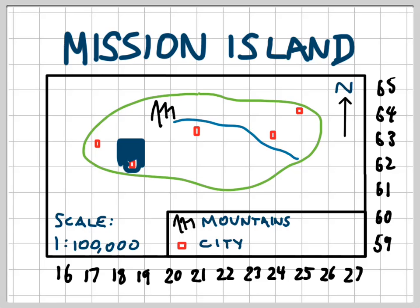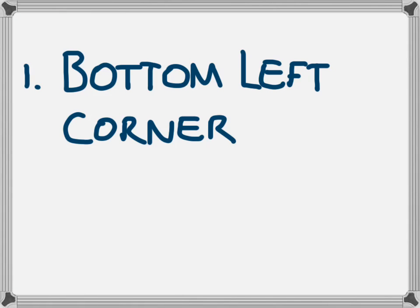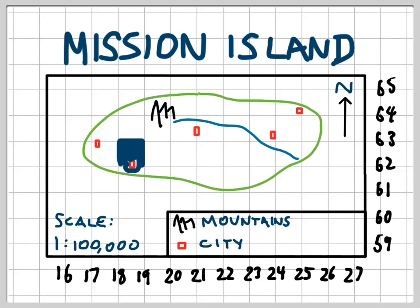Now we just have to figure out how we use these numbers to say where that box is located. There are two main steps. Step one: whenever we're doing area references, we need to start at the bottom left corner of the box. So on this box here, the bottom left corner is just there. When we look at the bottom left corner, we're going to see that there are two numbers which relate to that point. The first one is our easting: 18. And our northing is 62.